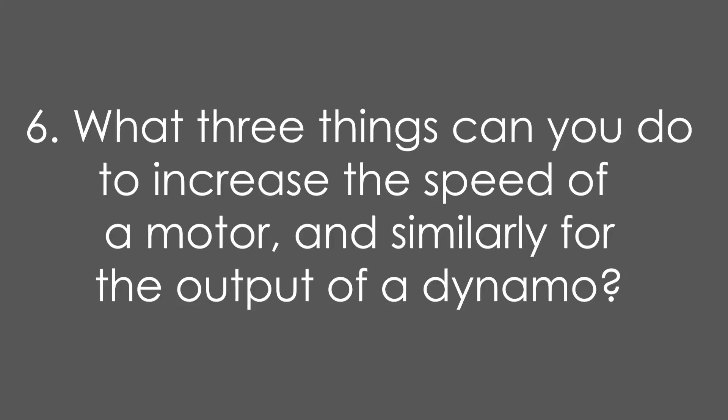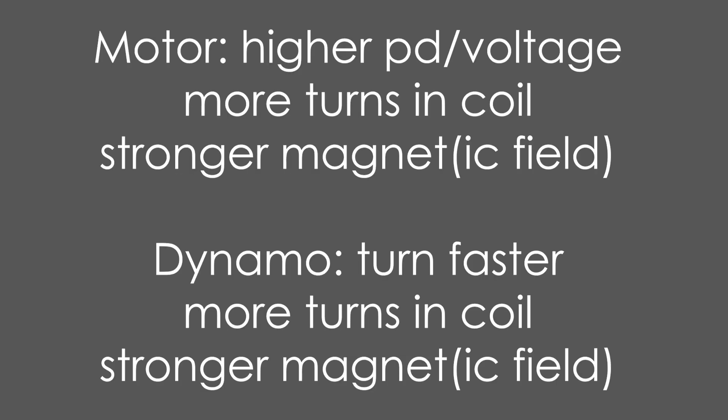Question 6: What three things can you do to increase the speed of a motor and similarly the output of a dynamo? In both cases: more turns in the coil, and a stronger magnet or magnetic field. For a motor, a higher PD; for a dynamo, turn it faster.